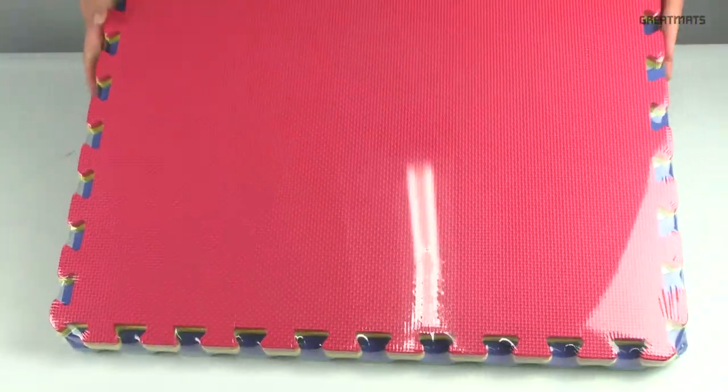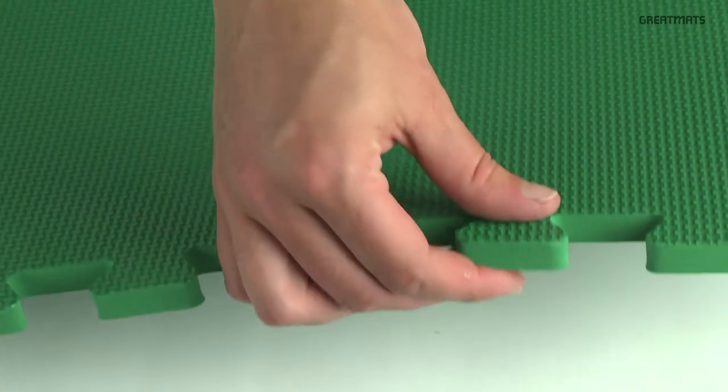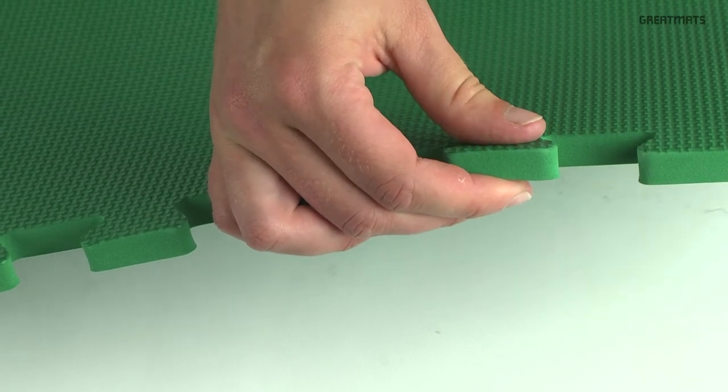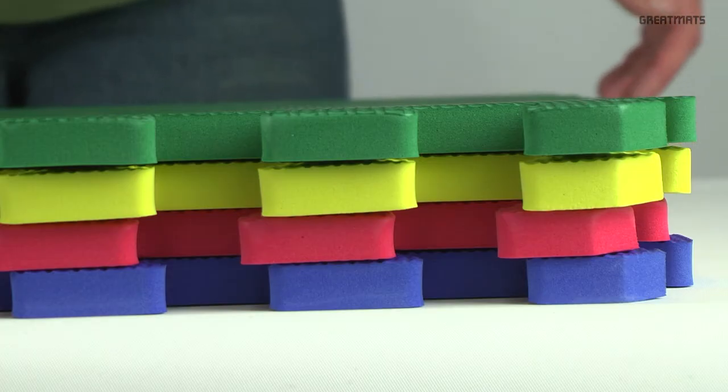The lightweight and flexible EVA foam floor tiles each offer a half inch of cushion over hard flat surfaces. Among its best features are its solid color throughout the tiles and waterproof design.